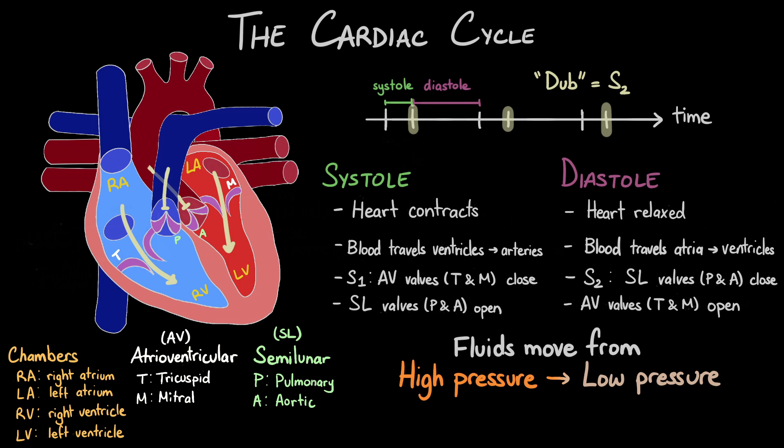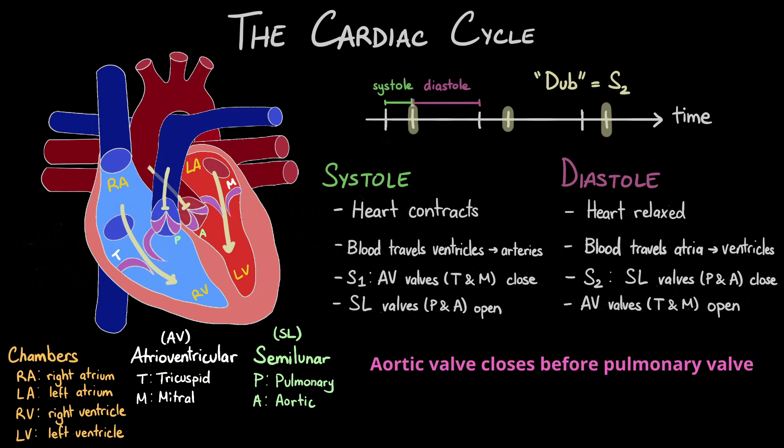Something to note is that the semilunar valves sometimes don't close at the same time. Normally, the aortic valve will actually close a tiny bit earlier than the pulmonary valve and cause what's called the splitting of the S2 sound.